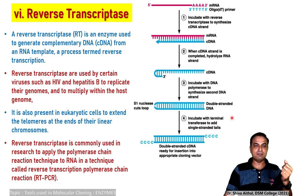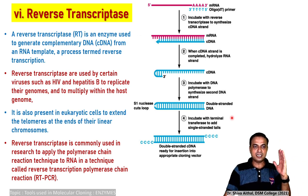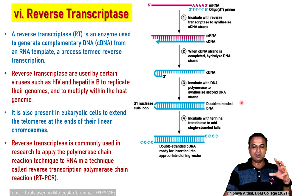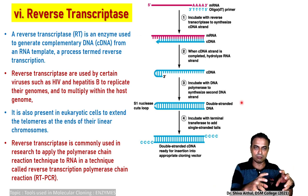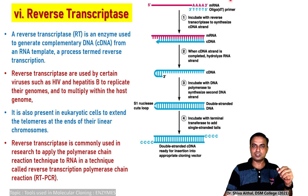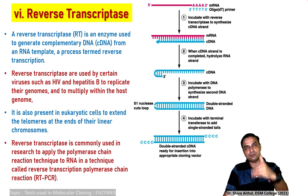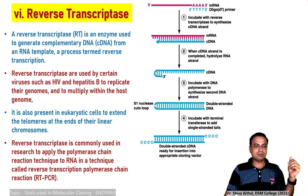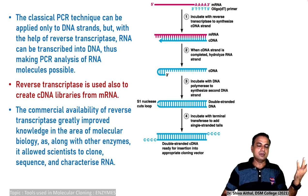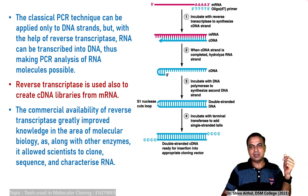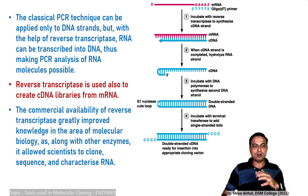Reverse transcriptase is found in HIV virus and hepatitis B virus, which use it for replication. It has been used extensively as a tool in molecular biology. It is also present in eukaryotic cells to extend the telomeres at the end of linear chromosomes — telomere processing has a role in age-related memory changes. Reverse transcriptase is commonly used in research for PCR, and I will explain its use with Taq polymerase in detail when we discuss PCR as a tool for molecular cloning.